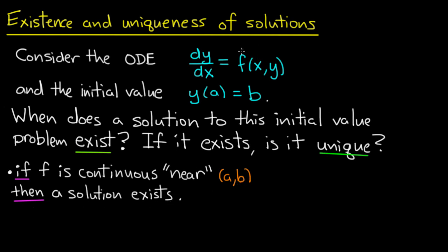Remember f here is the right-hand side defining the ordinary differential equation. f is a function of two variables, x and y, and we require that it be continuous near the point (a,b), which is the point I'm trying to get the solution to pass through in order to satisfy the initial value.